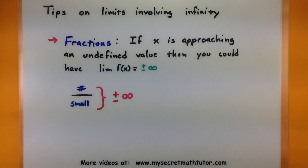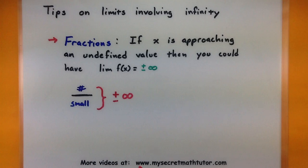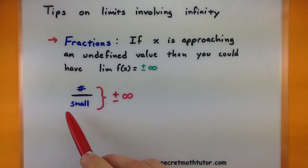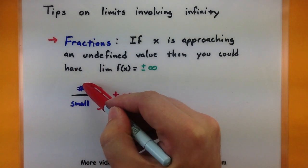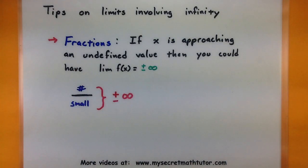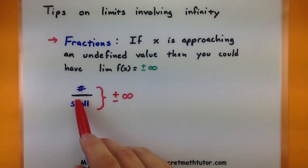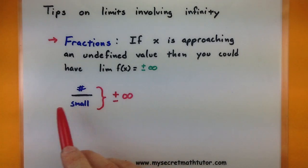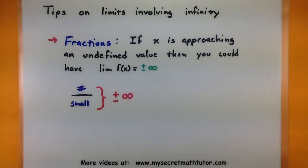You might be asking: how can you really tell if it's going towards positive or negative infinity? That depends on whether the bottom is positive or negative, or whether the top is positive or negative. You really have to keep track of the signs if you notice the bottom of the fraction just keeps getting smaller and smaller. This will make more sense as we get into the examples.